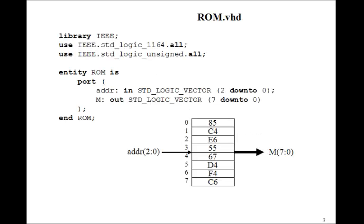Here's how we can write this program in VHDL. The inputs will be an address, standard logic vector 2 down to 0, and the output will be M, 7 down to 0.